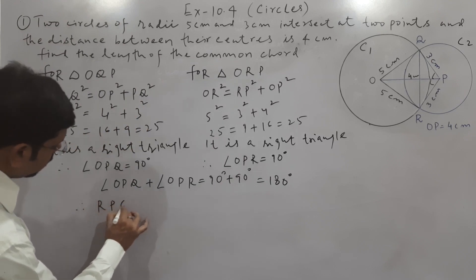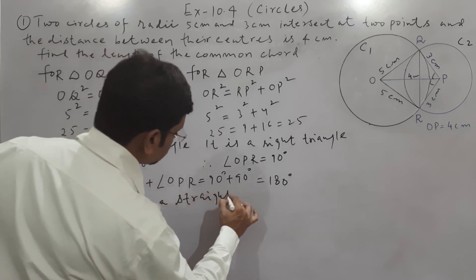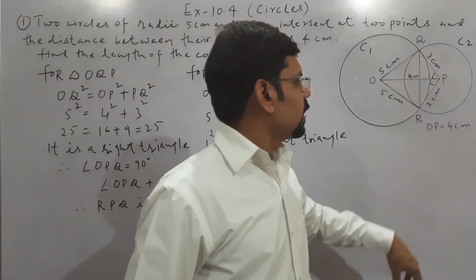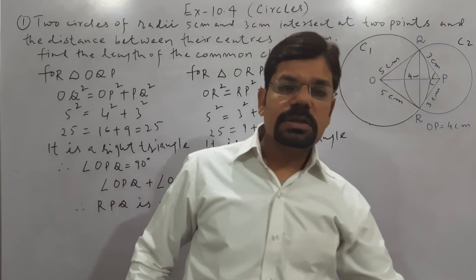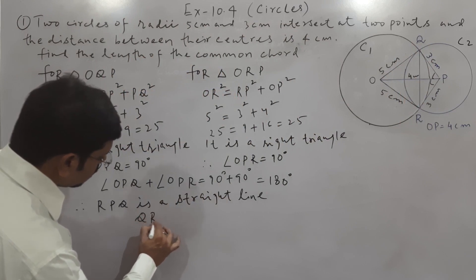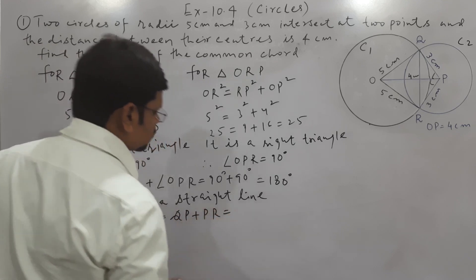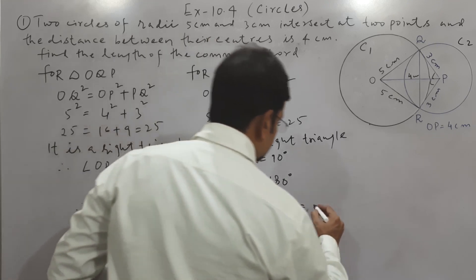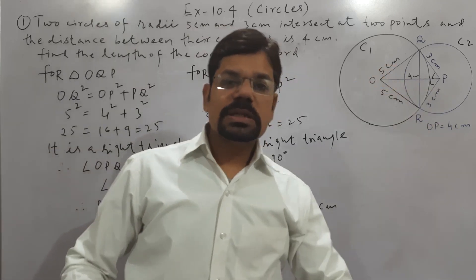Therefore RPQ is a straight line, and wherever R and Q are end points of RQ side and RPQ, it means both lines are same line. It means QR = QP + PR, so length of these two is 3 cm plus 3 cm equals 6 cm. It means length of common chord RQ is 6 cm.